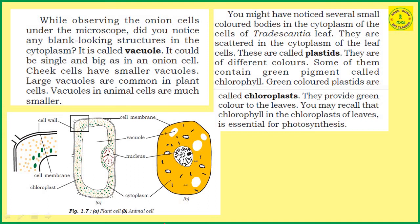While observing the onion cells or human cheek cells under the microscope, we can see the nucleus, cytoplasm, and cell membrane. When observing onion peel cells and human cheek cells under the microscope, structures like the nucleus, cytoplasm, and cell membrane are generally identified.